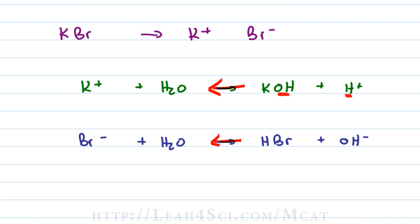So if we have a salt that consists of an unreactive cation, the positive ion, an unreactive anion, the negative ion, then we're going to get a neutral solution because it does not react.